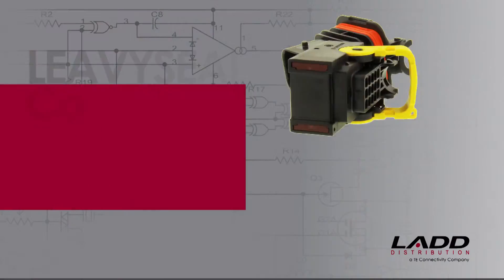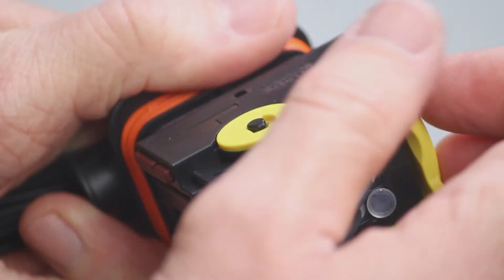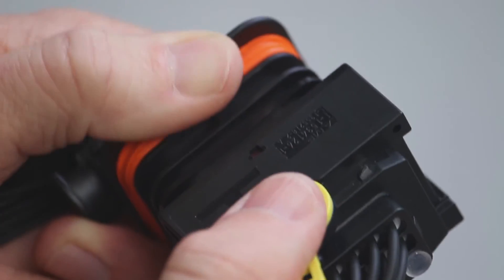Levee Seal Connector Unmating. To unmate Levee Seal Connectors, grasp the lever lock on the receptacle contact housing and pull up until it unmates from the tab housing.